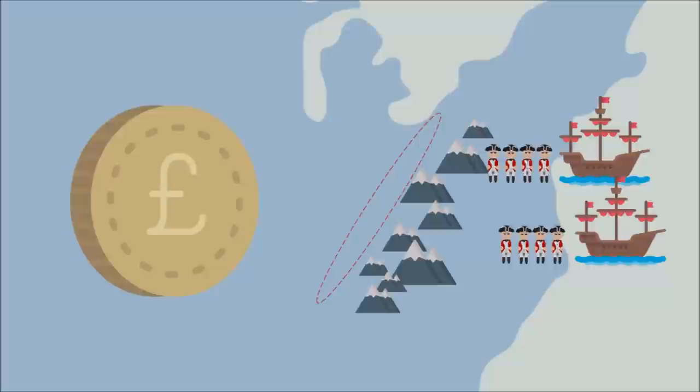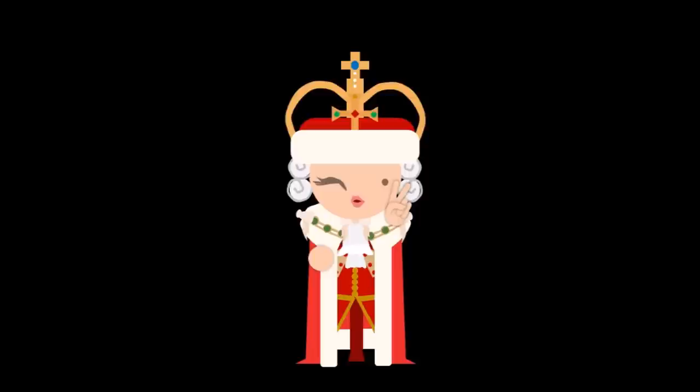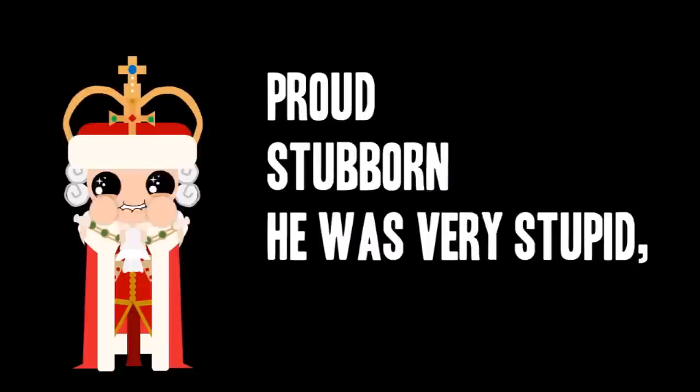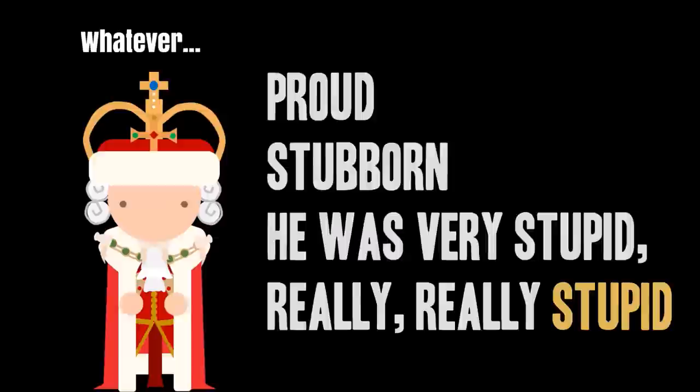Introducing King George III of England, who had been crowned in 1760. He was known for being proud, stubborn, and — as one historian put it — very stupid. Really, really stupid. Hey, I'm just citing some sources, don't blame me.